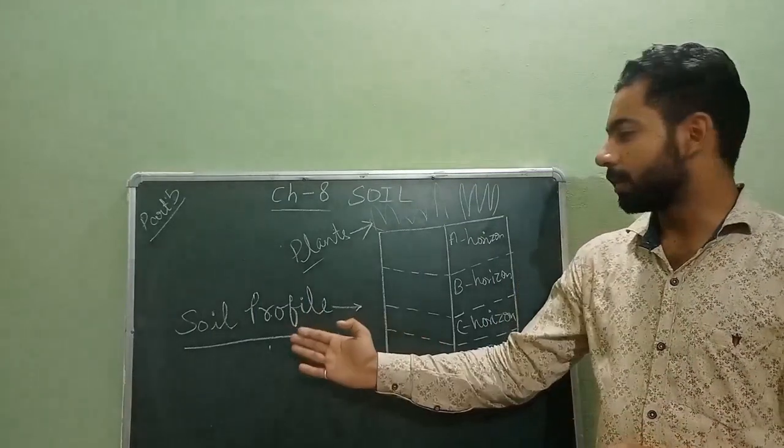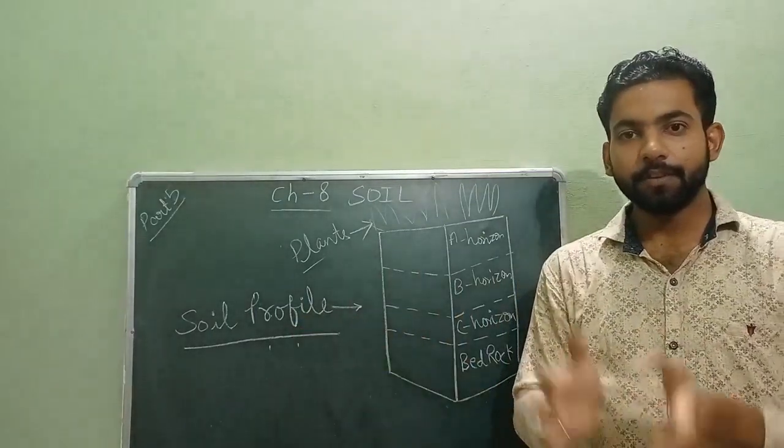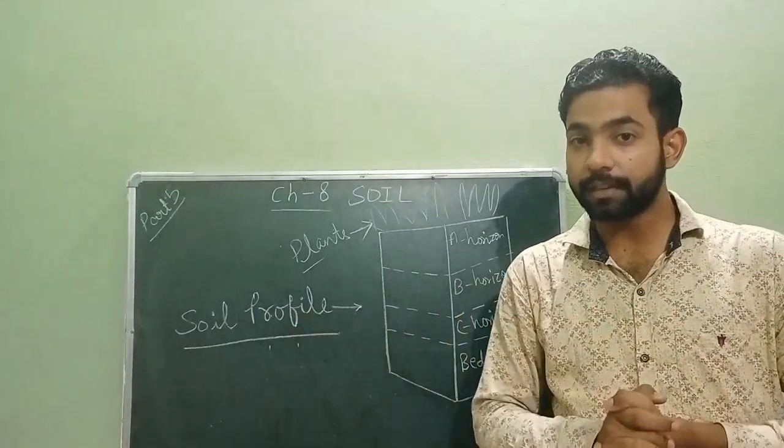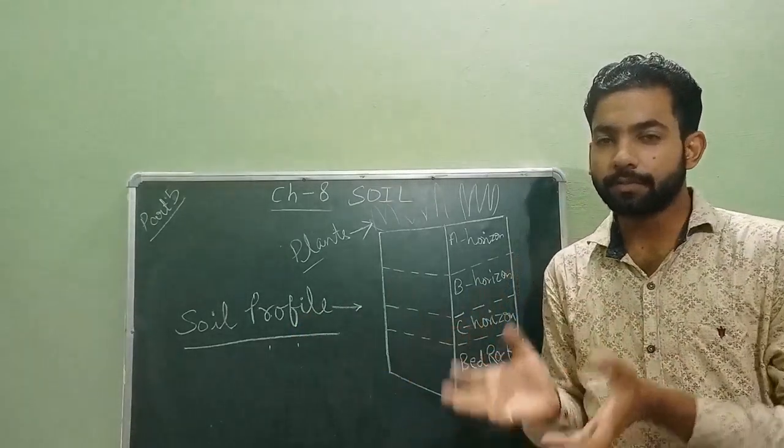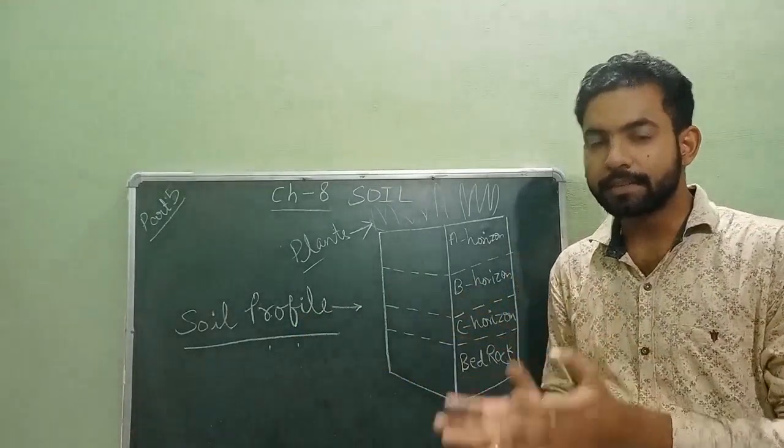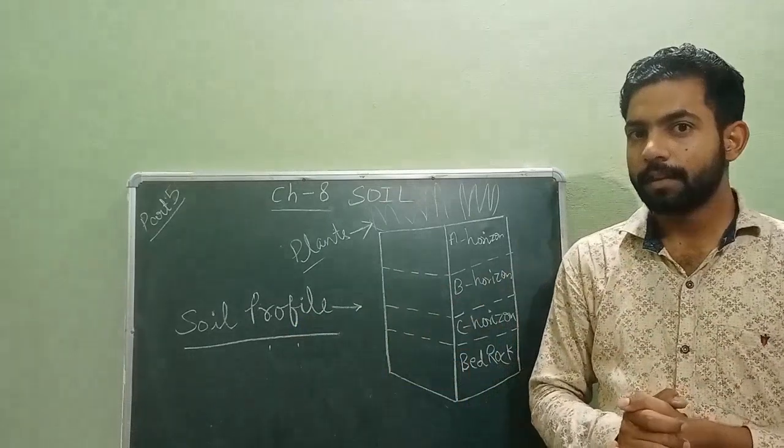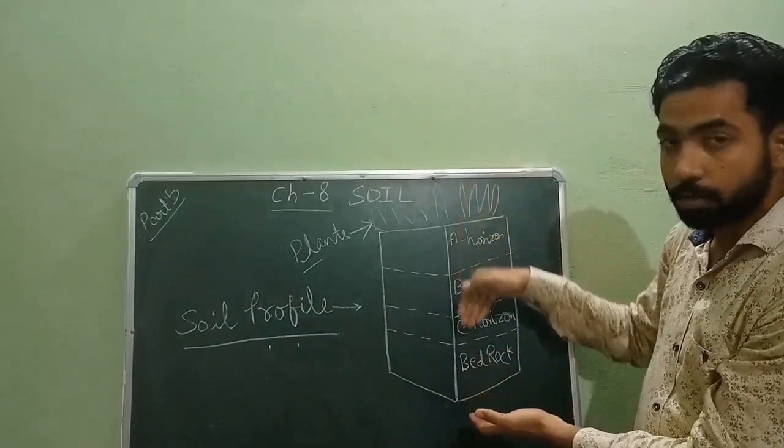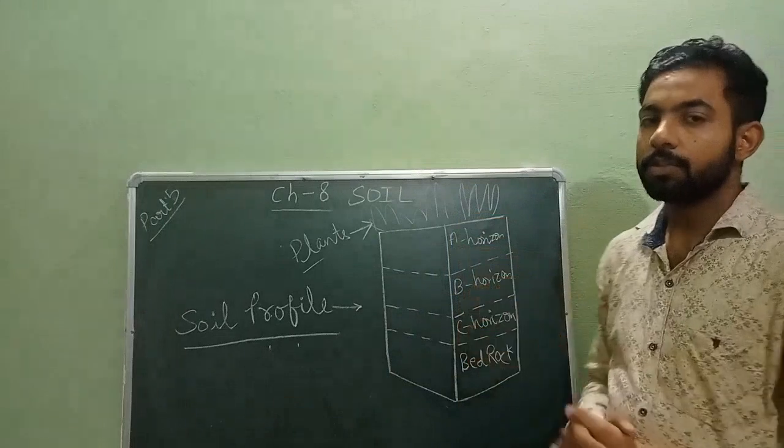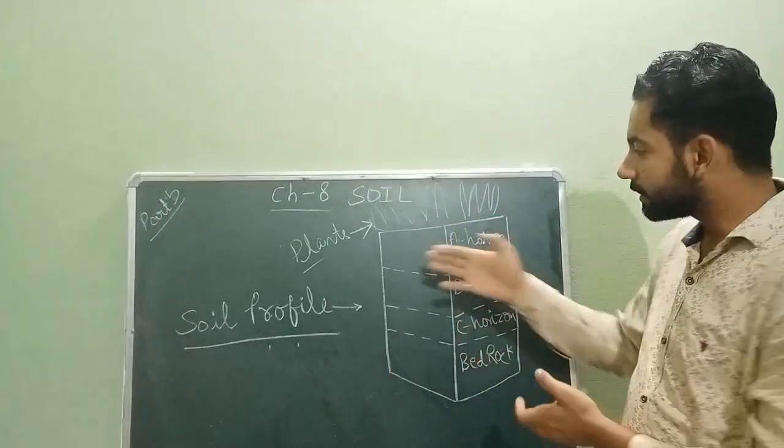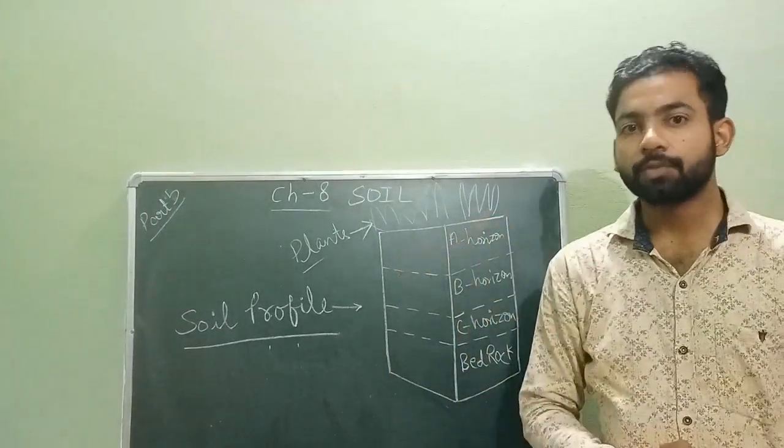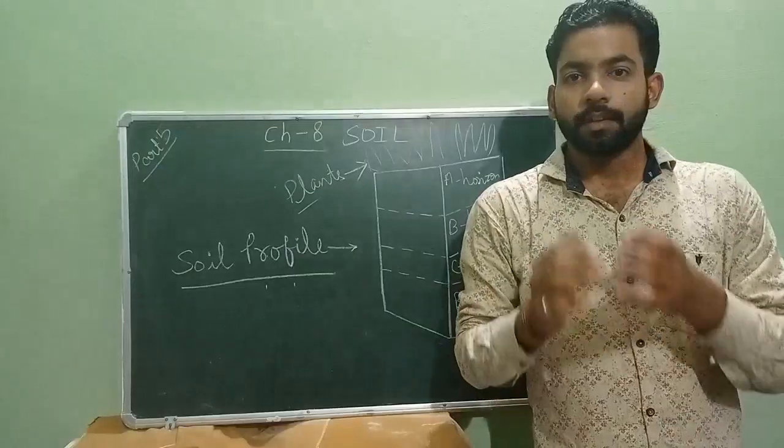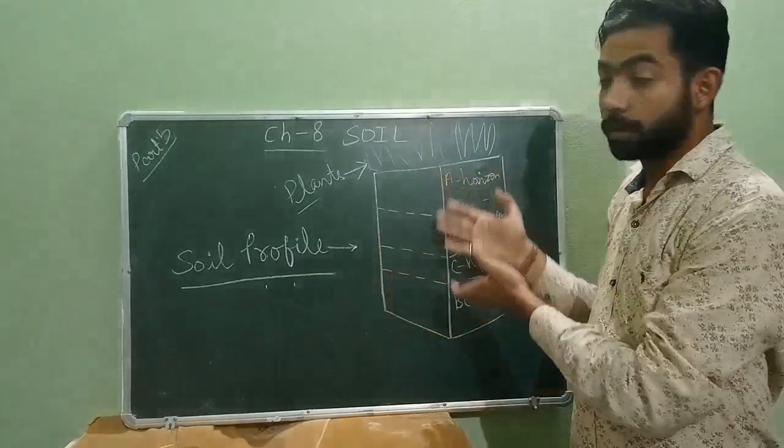Our new topic is soil profile. If you cut deeply into the ground vertically, the way you cut a slice of a cake, you would see the layers that make up soil. A vertical section through different layers of soil is known as soil profile. These layers are known as soil horizons. Now we will know about these horizons or layers one by one.